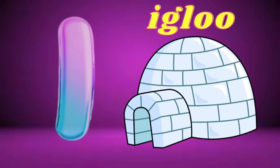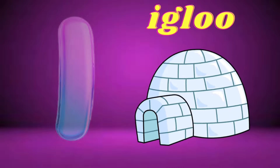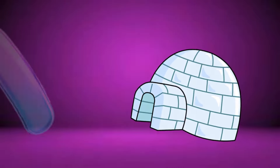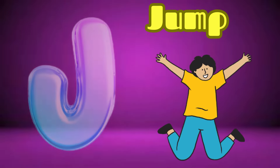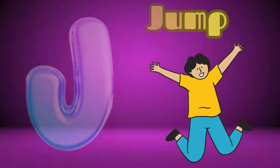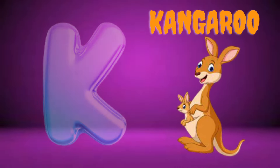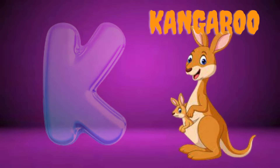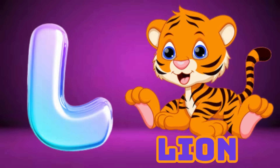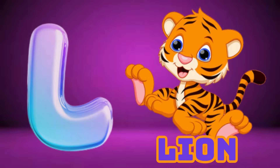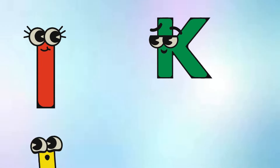I is for Igloo, I-I-Igloo. J is for Jump, J-J-Jump. K is for Kangaroo, K-K-Kangaroo. L is for Lion, L-L-Lion.